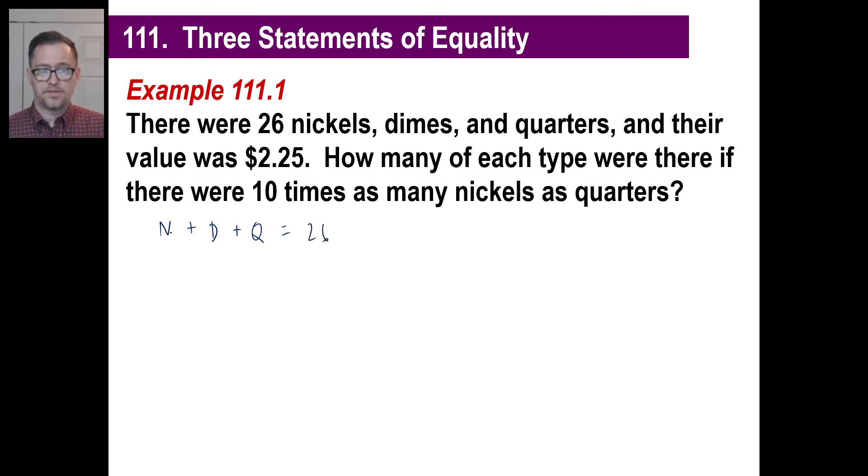Stop right there. You tell me how do you write that equation. There were 26 nickels, dimes, and quarters. Nickels plus dimes plus quarters is 26. In your book, they might have N sub N, N sub D, N sub Q. That's all fine too. Their value was $2.25. There were 10 times as many nickels as quarters.